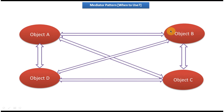Using that reference, Object A can call Object B's method and send a message to Object B. Similarly, if Object B wants to send a message to Object C, then Object B needs to know a reference of Object C. Using that reference it can call some method of Object C and send a message to Object C.